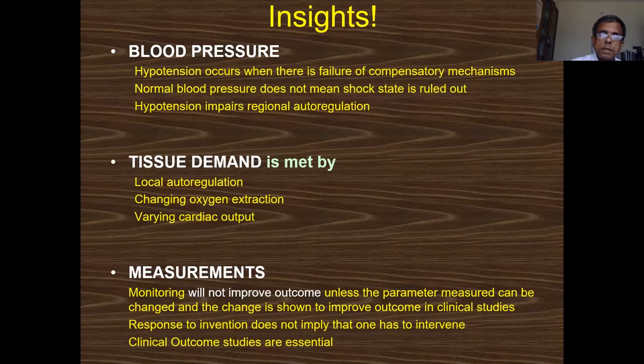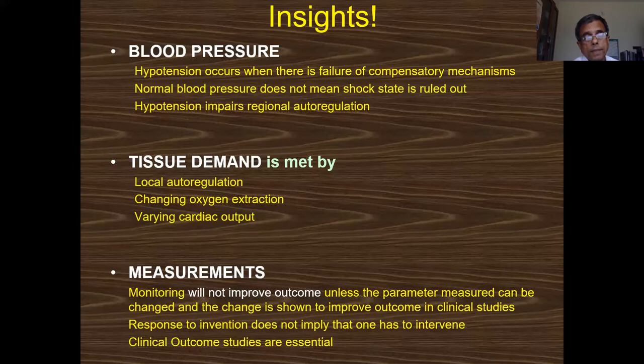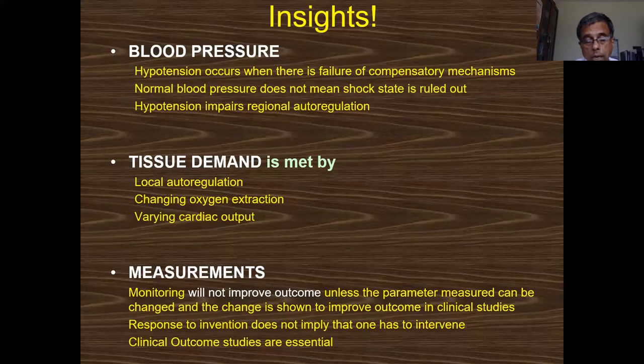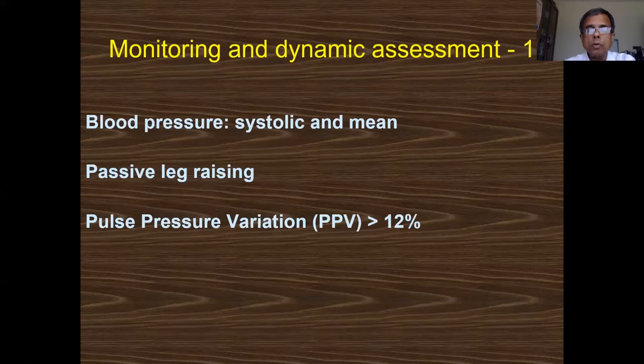Hypotension also impairs regional autoregulation for each organ. Normally, tissue demand is met by local autoregulation, changing oxygen extraction, and varying cardiac output. Remember: measurement does not improve outcome unless you can change the parameter being measured, and that change has been shown to improve outcome in clinical studies.